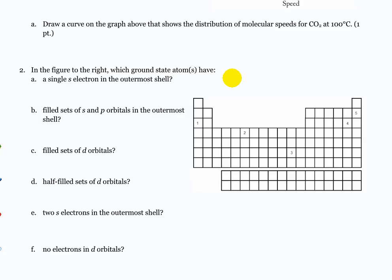In the figure to the right, which ground state atoms have a single S electron in the outermost shell? The options are one, two, three, four, and five. A single S electron in the outermost shell? One, two, and three.